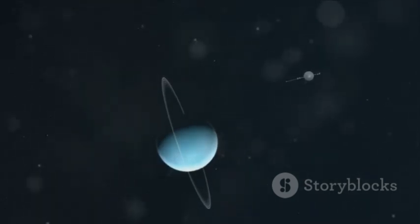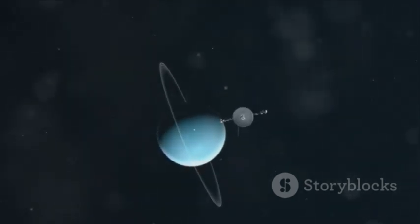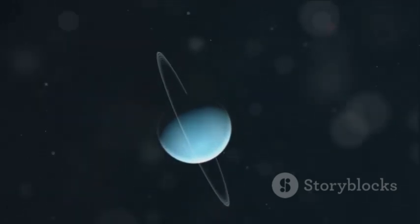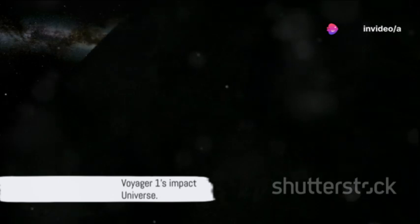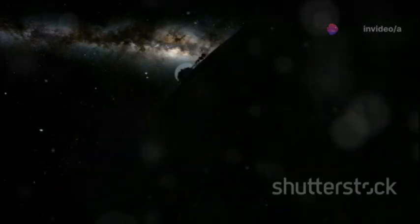In the year 2012, Voyager 1 made history again, transitioning into the heliopause and becoming the first human-made object to enter interstellar space. Voyager 1's journey through the solar system has forever changed our understanding of the universe.